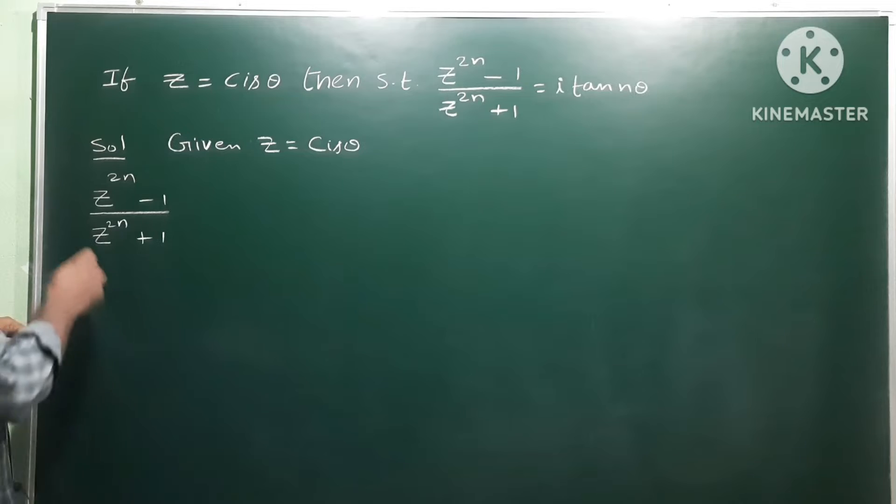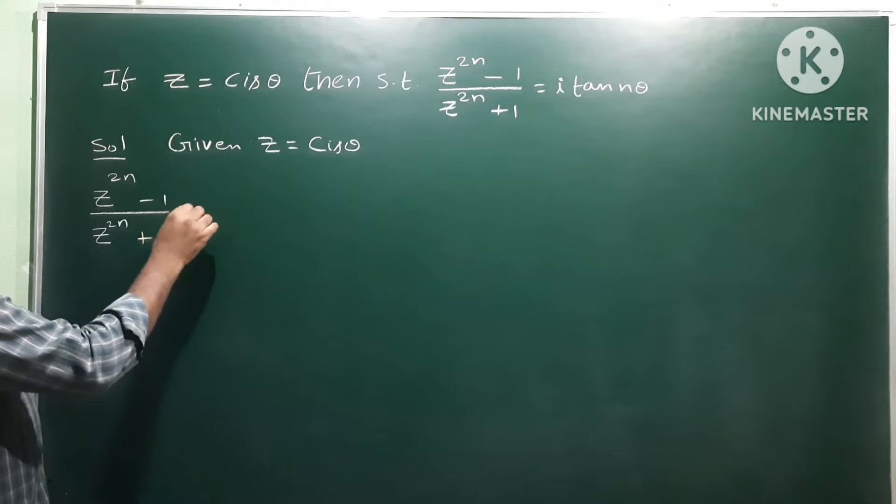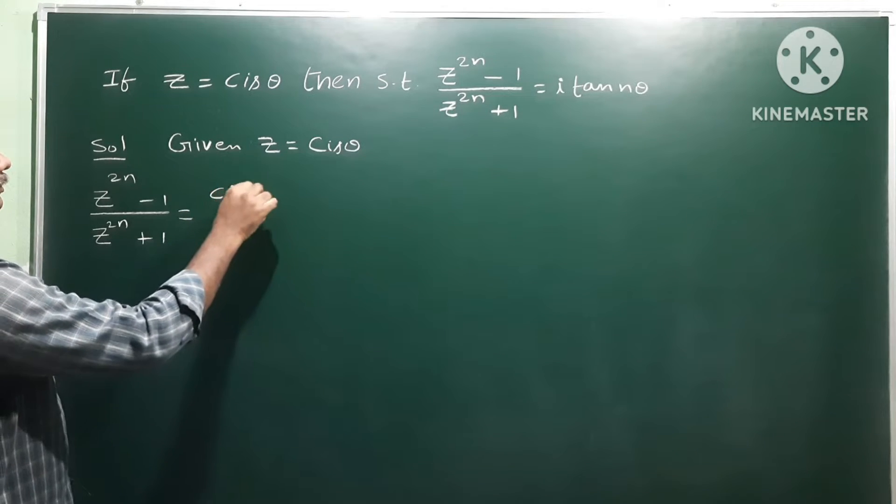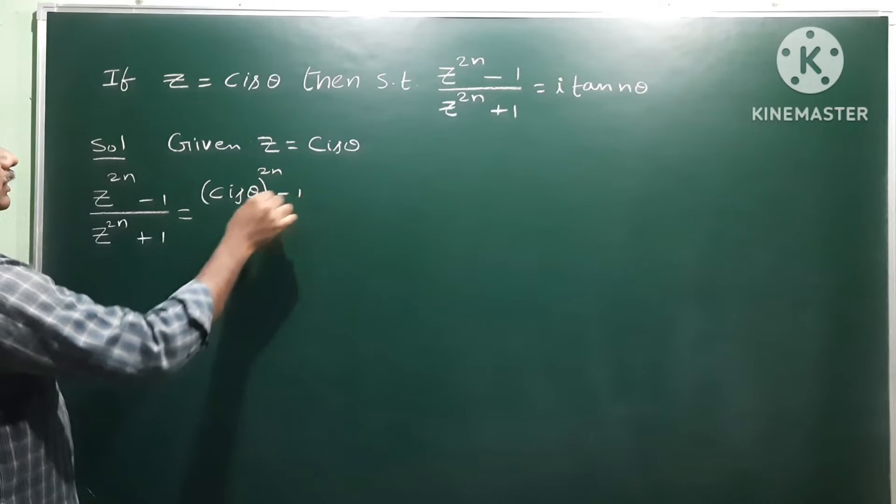So let us take z power 2n minus 1 by z power 2n plus 1. Now substitute the value of z, so substitute cis θ whole power 2n minus 1 by